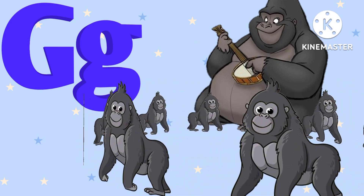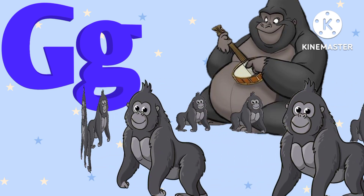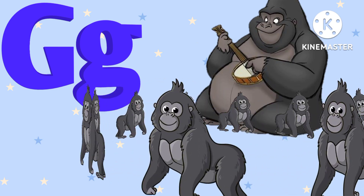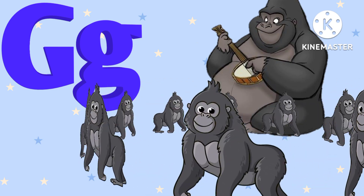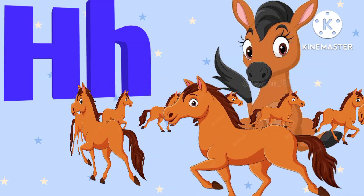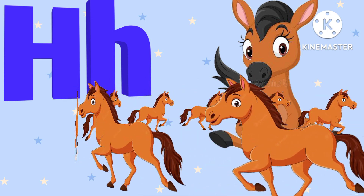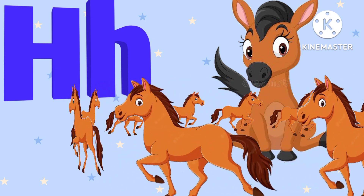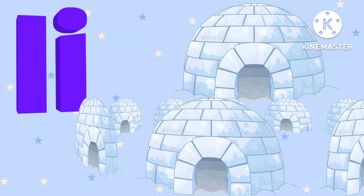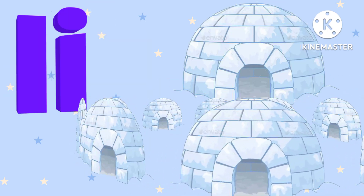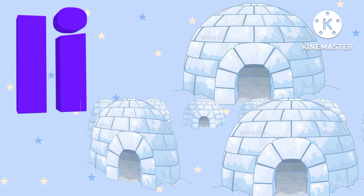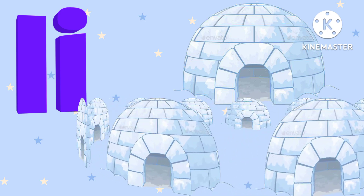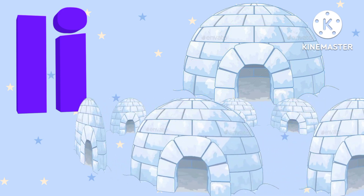G is for gorilla. G. Gorilla. H is for horse. H. Horse. I is for iguana. I. Iguana.